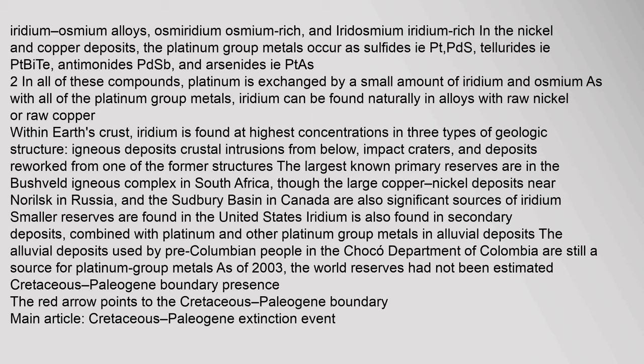The largest known primary reserves are in the Bushveld Igneous Complex in South Africa, though the large copper-nickel deposits near Norilsk in Russia, and the Sudbury Basin in Canada are also significant sources of iridium. Smaller reserves are found in the United States. Iridium is also found in secondary deposits combined with platinum and other platinum group metals in alluvial deposits. The alluvial deposits used by pre-Columbian people in the Chaco department of Colombia are still a source for platinum group metals. As of 2003, the world reserves had not been estimated.